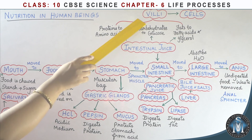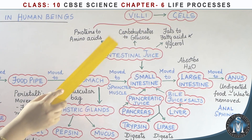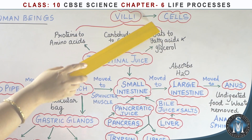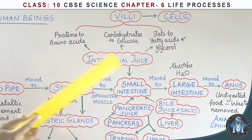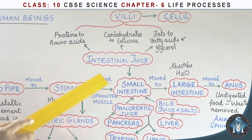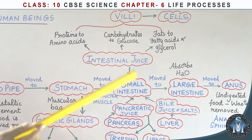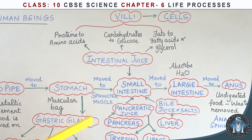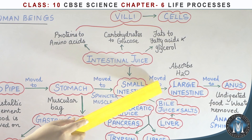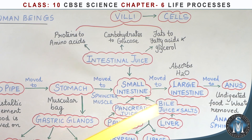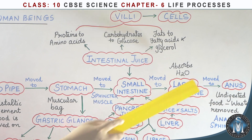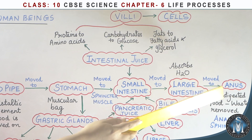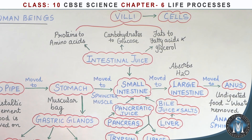After digestion, the nutrients are absorbed through finger-like projections in the small intestine (villi) into the blood. The digested nutrients are absorbed into the bloodstream. The undigested food then passes into the large intestine, where water is absorbed, and the remaining undigested material passes to the anus.